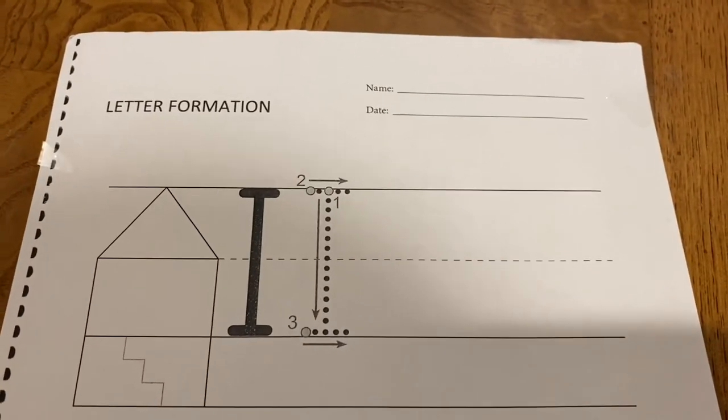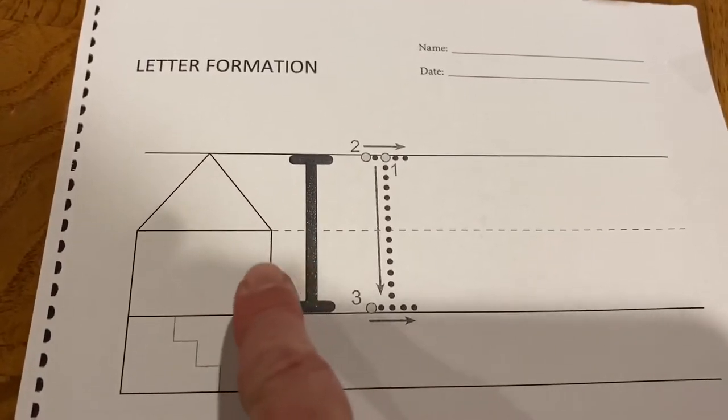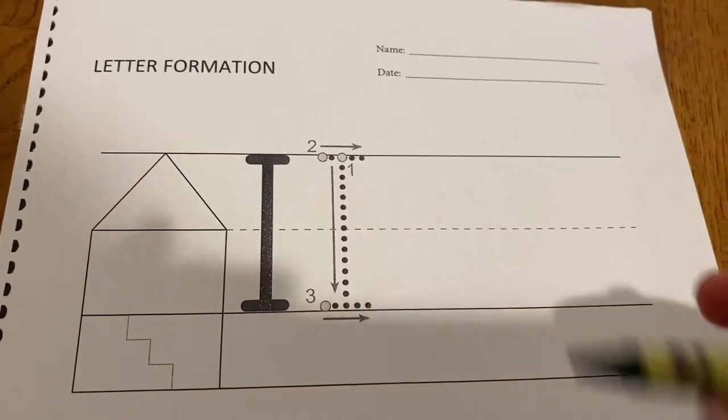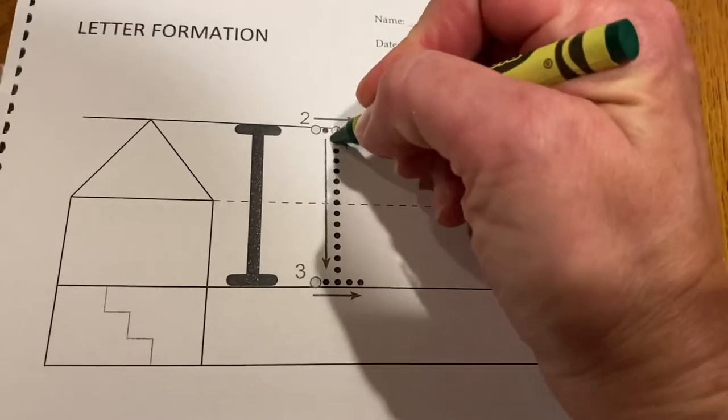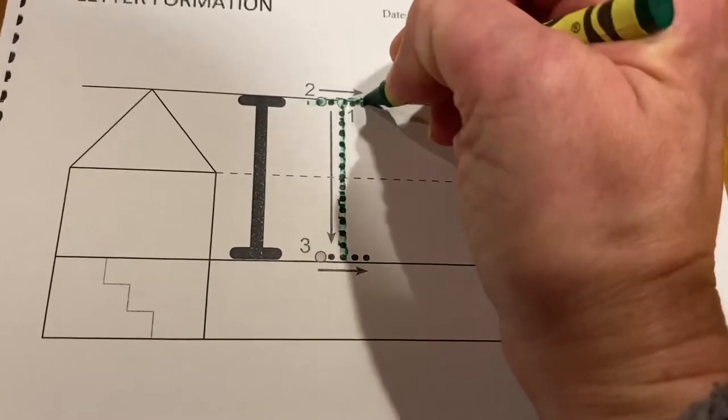Get out your green crayon and here we go. Take a look - uppercase I is in the attic and the main floor only. We're going to start with our first line: a line straight down, a line across on the top line, and a line across on the bottom line.